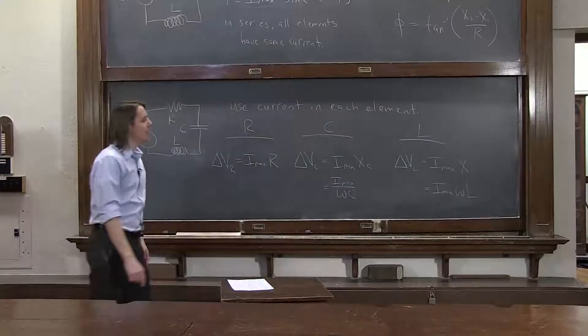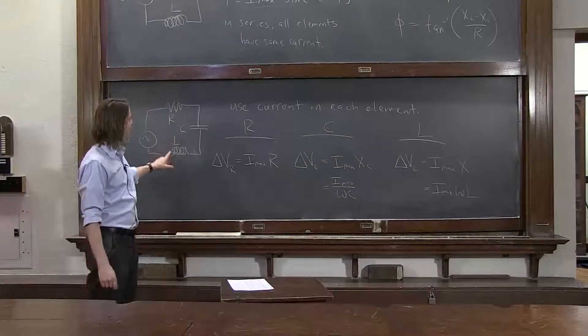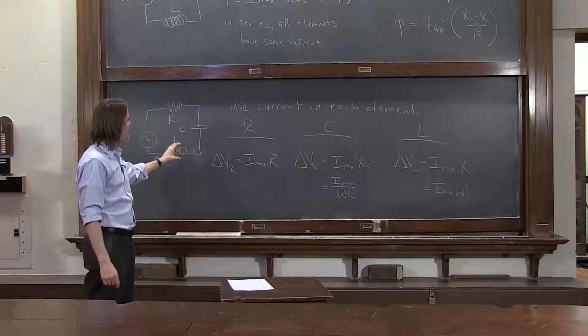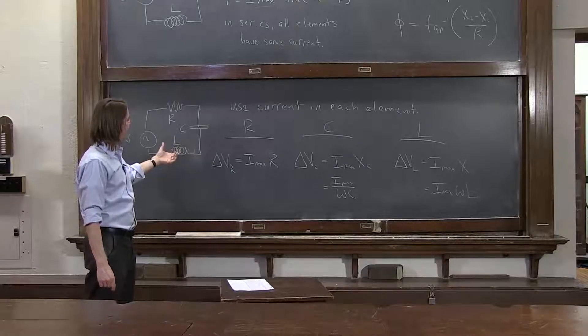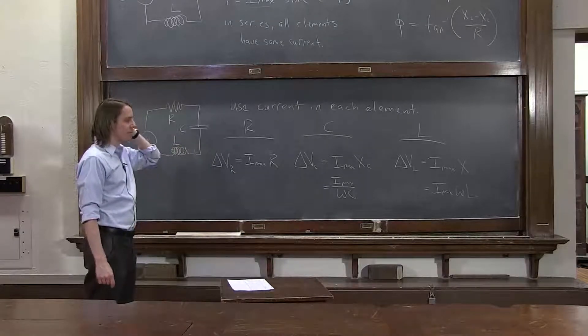And there, the inductor is the opposite of the capacitor. At high frequency, you're changing this magnetic field really fast. A lot of induction, therefore, a big voltage drop across the inductor.